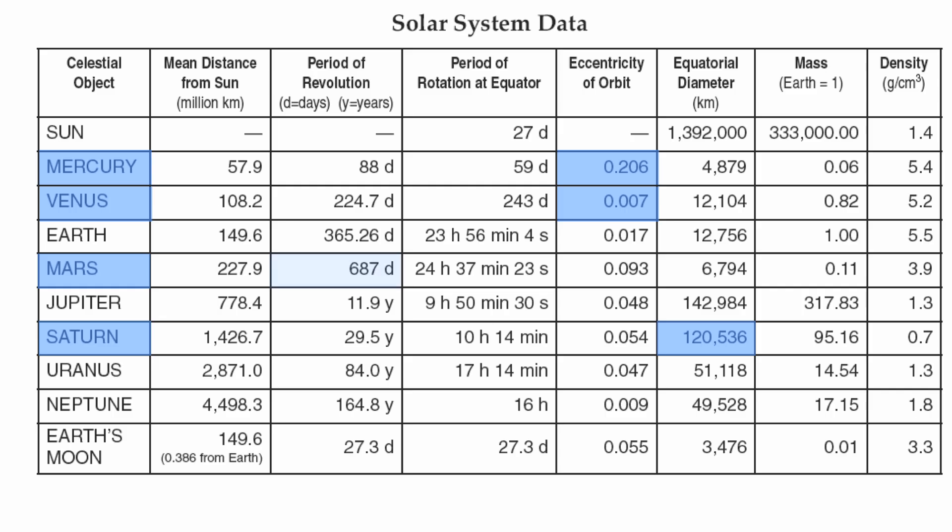We want to know about Mars - period of revolution. That's going to turn out to be about 687 days.